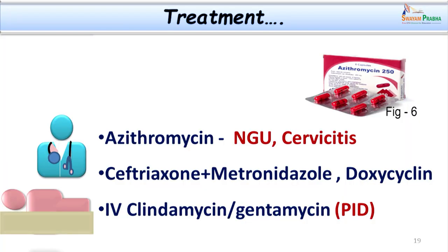The treatment for chlamydial infections is azithromycin, which is the drug of choice for non-gonococcal urethritis or cervicitis caused by Chlamydia. If pelvic inflammatory disease is noted, treatment involves ceftriaxone, metronidazole — because anaerobic bacteria are invariably involved in pelvic infections — along with doxycycline. In pelvic inflammatory disease we can also treat with IV clindamycin or gentamicin. This concludes our discussion on the Chlamydia group of organisms, their morphology, life cycle, pathogenesis, and clinical infections.